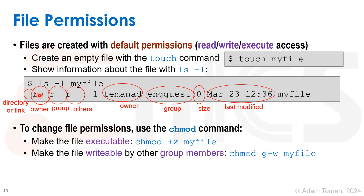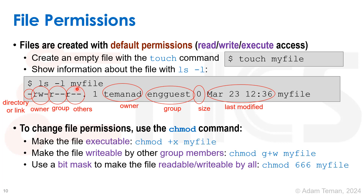One common way to use chmod is to treat the permissions as a collection of bits — nine bits, or three groups of three. Each group of three is basically an octal digit with values 0 through 7. For example, 6 is binary 110, meaning read, write, and not execute. So 'chmod 666' sets read and write for owner, group, and everyone. If I want only the owner to have those permissions, I can do 'chmod 600'.